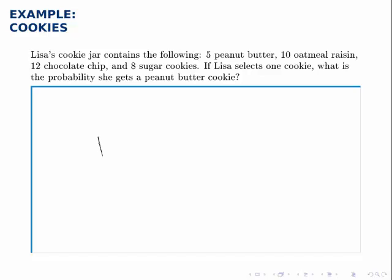Again, probability is simply the number of ways that our scenario can happen, so in this case the number of peanut butter cookies in the jar, divided by the number of total possibilities for what can happen. So, the total number of cookies.